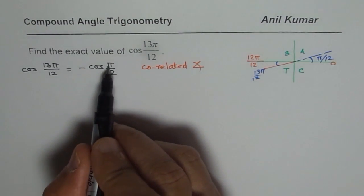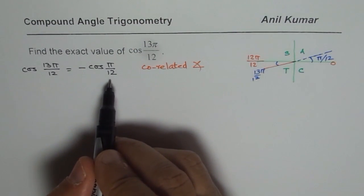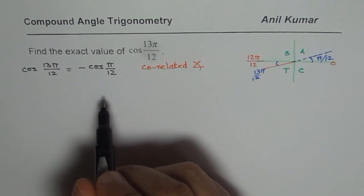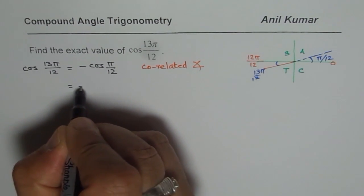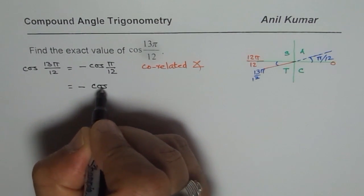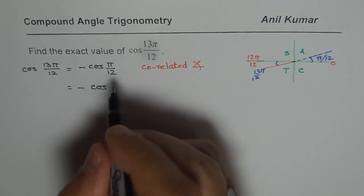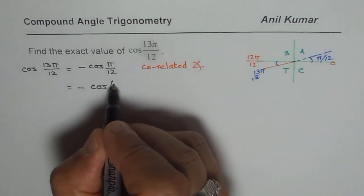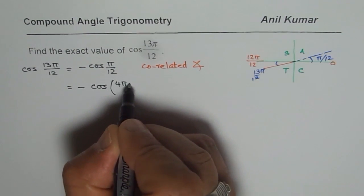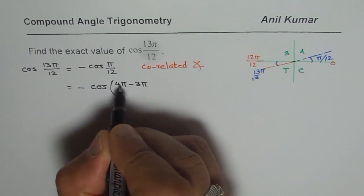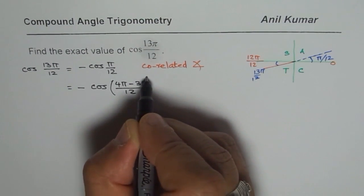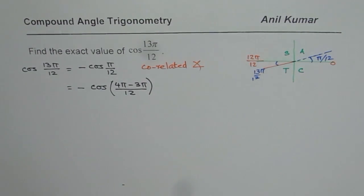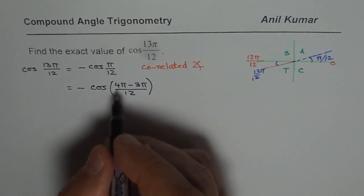Now, we could write π/12 as a combination of two angles which we know about. So, let's see how to do that part. So, it is cos of, I need just π. So, that means I could write this as 4π minus 3π. Do you see that? 4π minus 3π is π. So, I am just showing you steps of doing things. 4π minus 3π.